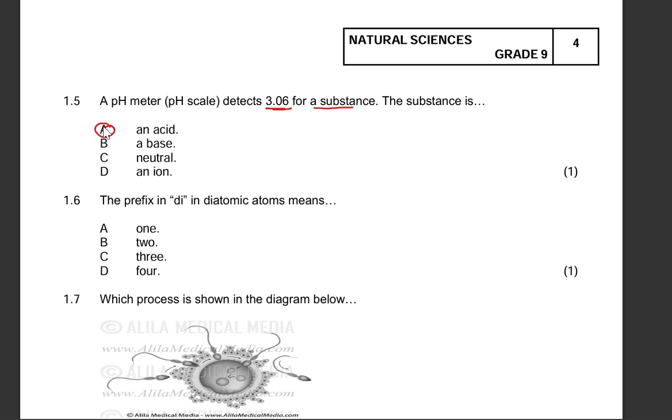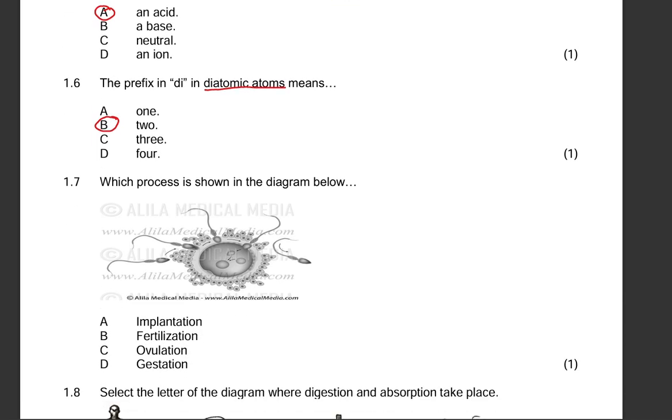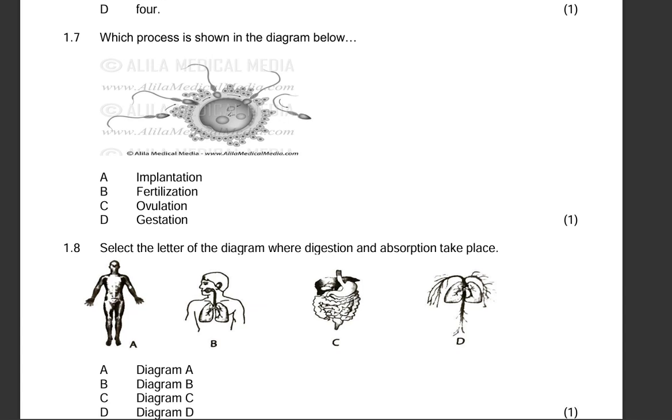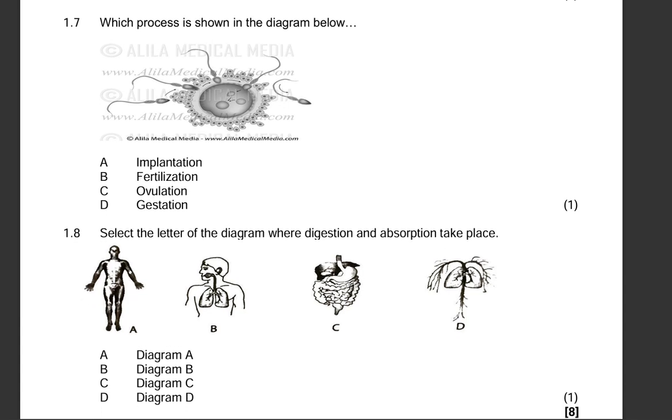1.6: the prefix in diatomic atoms means what? Is it one, two, three or four? This one is a giveaway guys. 1.6, di means two. Easy peasy stuff. 1.7: which process is shown in the diagram below?